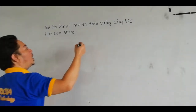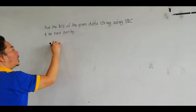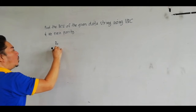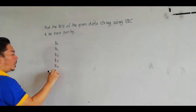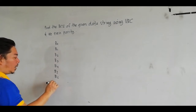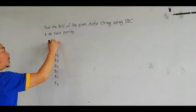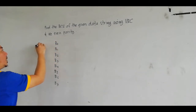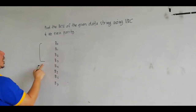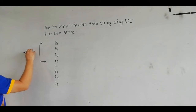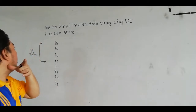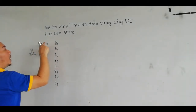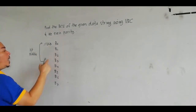For example, we have bit 0, bit 1, bit 2, bit 3, bit 4, bit 5, bit 6, and bit number 7. The first 4 bits is your first nibble. A nibble is 4 bits, or half a byte. This is your least significant nibble — this is your LSB.